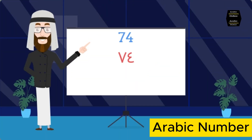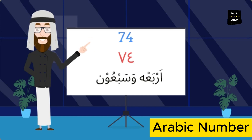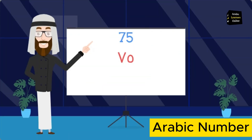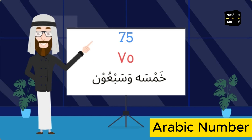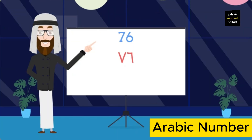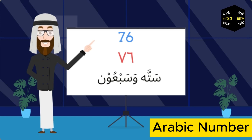Seventy-four: أربعة وسبعون (arba'ah wa-sab'oon). Seventy-five: خمسة وسبعون (homsah wa-sab'oon). Seventy-six: ستة وسبعون (sitta wa-sab'oon).